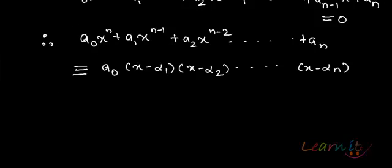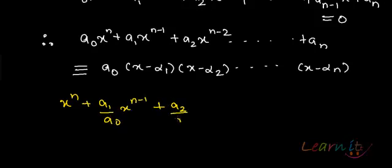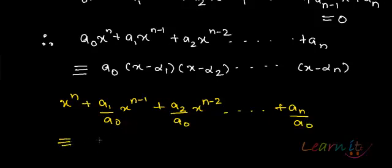Now let us cancel out a₀ by dividing both sides by a₀. So we get: xⁿ plus (a₁/a₀)xⁿ⁻¹ plus (a₂/a₀)xⁿ⁻² and so on plus (aₙ/a₀) equals (x − α₁)(x − α₂)···(x − αₙ).